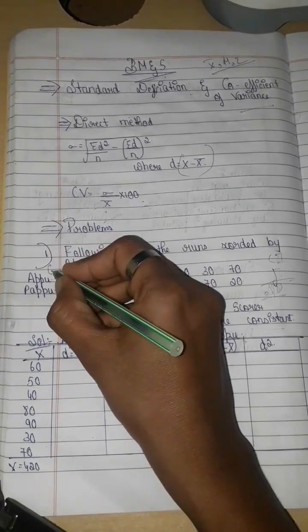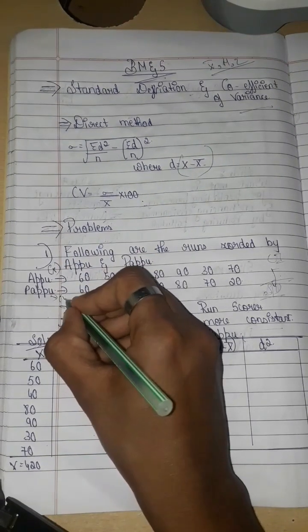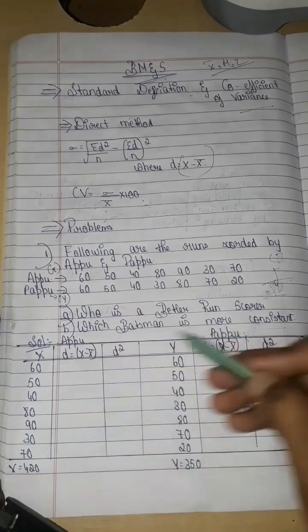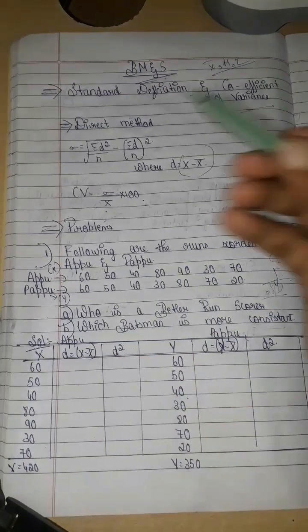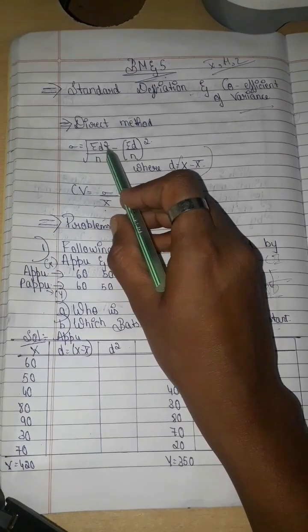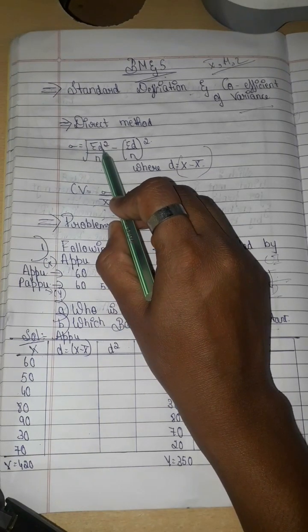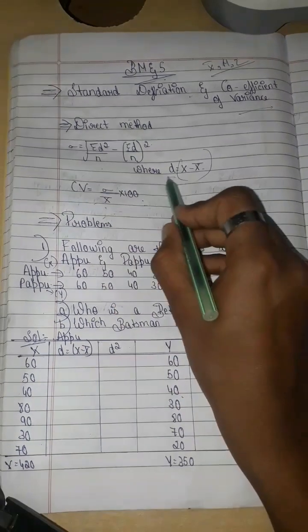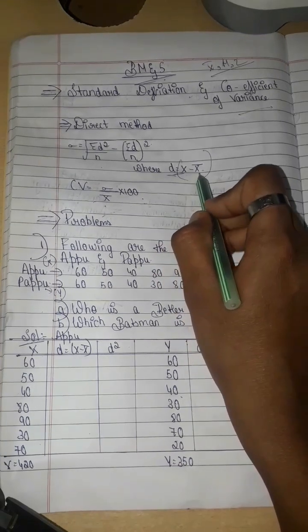Now we will find the run scores of x and y. We have x information and y information. We will apply the first formula. In this formula we see sigma d² divided by n. So we need to find d², and first we find d. In the formula, d is x minus x̄.